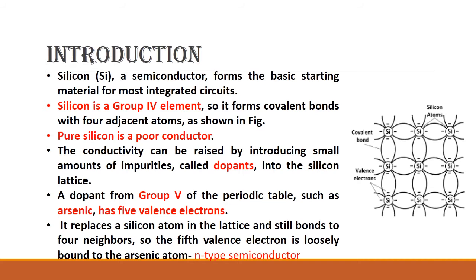We can add either trivalent or pentavalent impurity. Pentavalent impurity, for example arsenic, has five valence electrons, giving excess electrons. This type of semiconductor is called N-type semiconductor. If we add trivalent impurity into silicon, holes are created and current conduction is through holes. This is called P-type semiconductor.